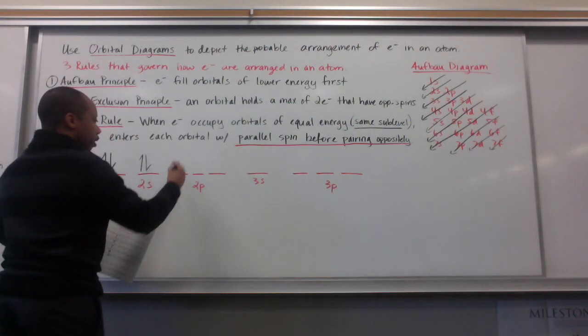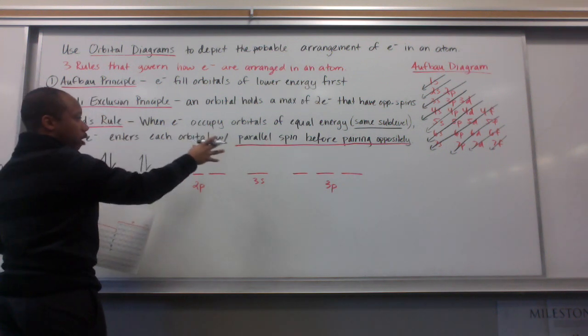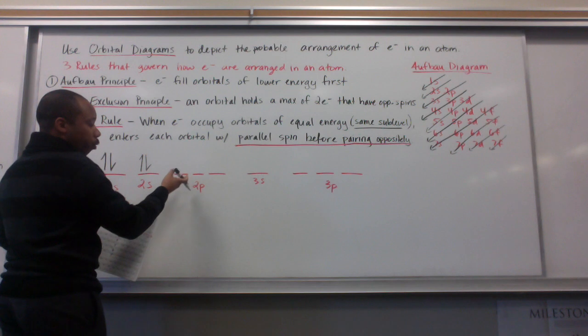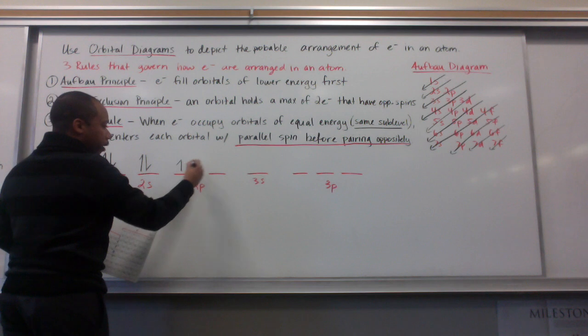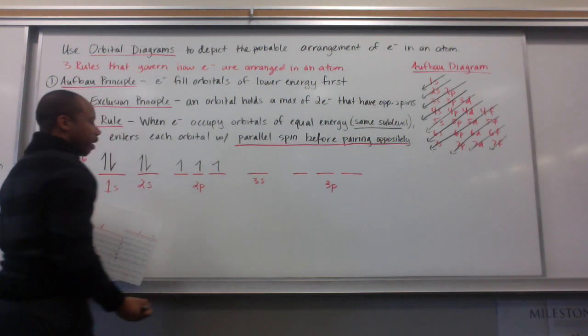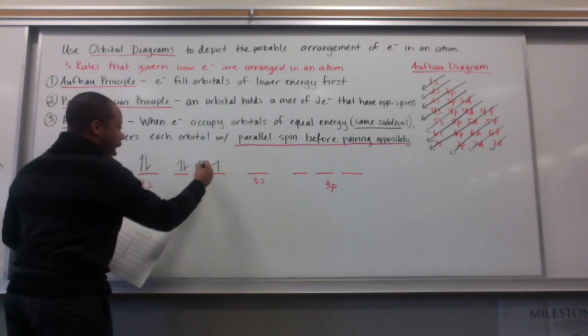And now, I'm going to 2p. The Hund's rule says when I have electrons occupying orbitals that have equal energy, meaning they're in the same sublevel, I put them in with parallel spin first, and then I pair oppositely.